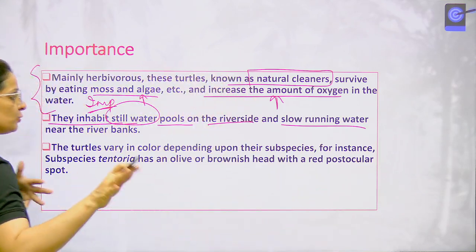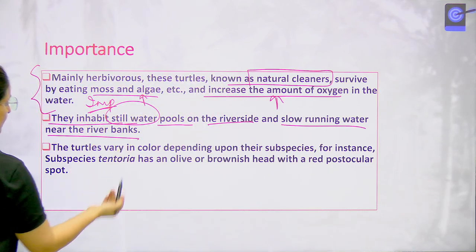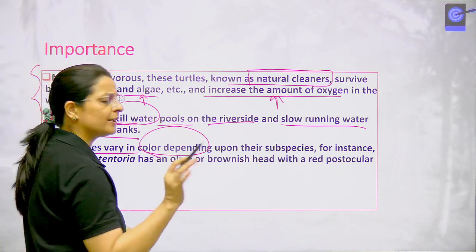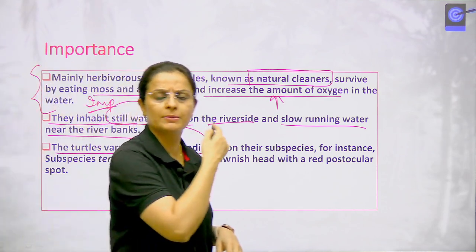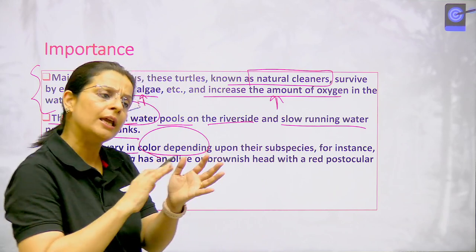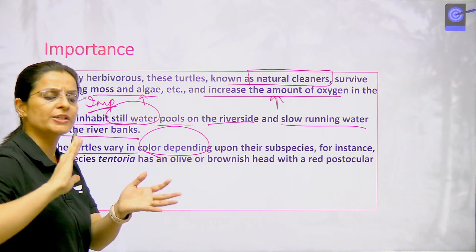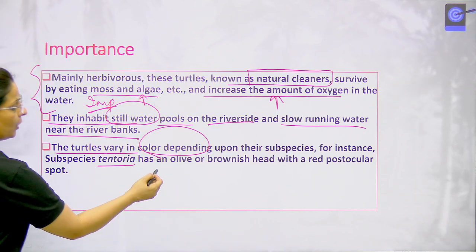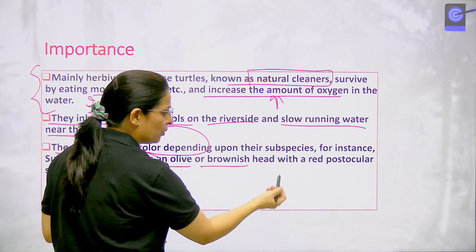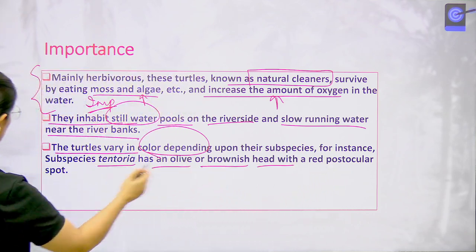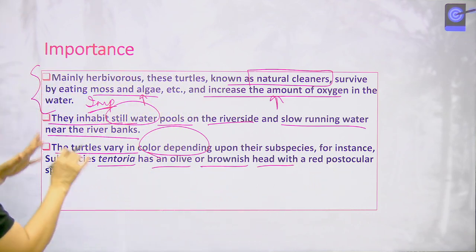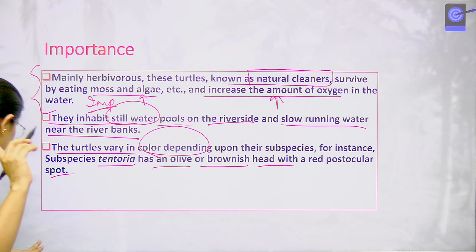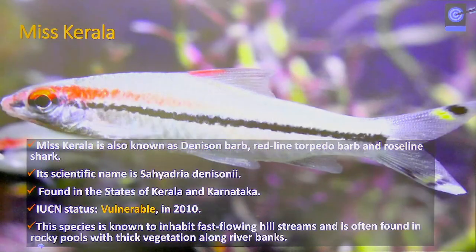These turtles inhabit generally still water pools on the riverside and slow-running water. They have different colors depending upon their subspecies — for example, Tentoria has an olive or brownish color with a red postocular spot. That is the Indian Tent Turtle.